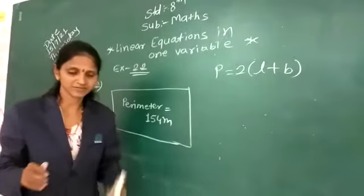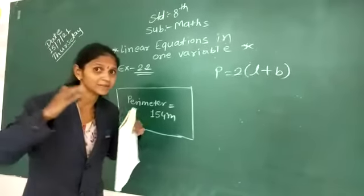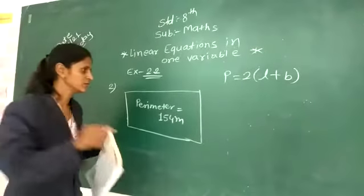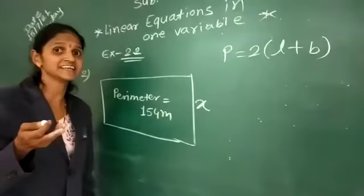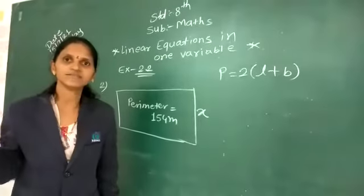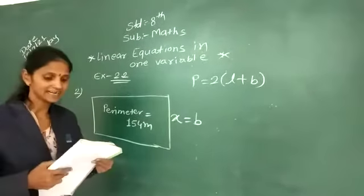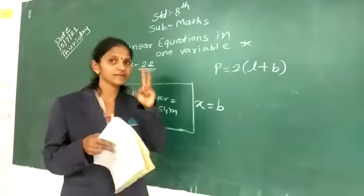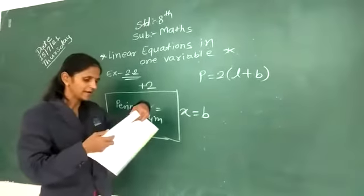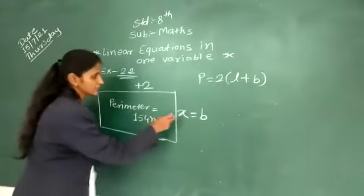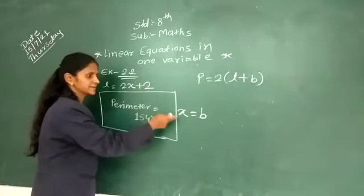And also they have given in the question: its length is 2 meters more than twice its breadth. So length is bigger than the breadth. Since we don't know the value, we can take any letter. So let breadth equal x. After that, the length is 2 meters more — more means plus 2. And twice its breadth means 2x. So our length is equal to 2x plus 2, and breadth is equal to x.